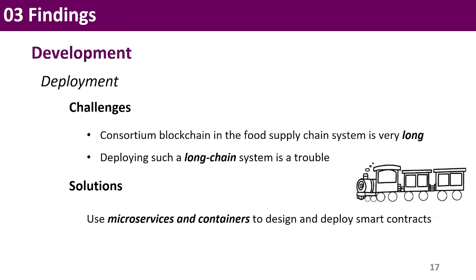Regarding deployment, the consortium blockchain in the food supply chain system is very long because of the complex business logic, and it is a challenge to deploy such a long chain system. We might design and deploy smart contracts using microservices and containers, which can help reduce the burden of deployment in a modularized way.